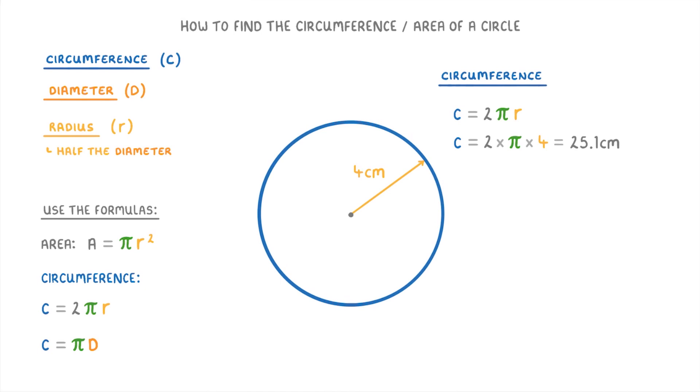Also just to show you how it works, if you wanted to use the bottom equation of circumference equals pi d instead, then you'd just have to work out the diameter first. And remember that the diameter is just 2 times the length of the radius. So if the radius is 4 centimeters, then the diameter is 2 times 4 centimeters, so 8 centimeters. Which means that our circumference equation now becomes C equals pi times 8, which is also 25.1 centimeters.